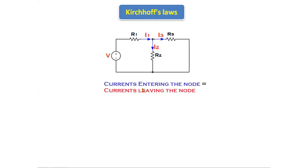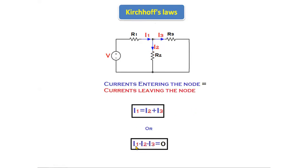Applying the statement that currents entering the node equal currents leaving the node, we get I1 = I2 + I3. We can also write this as I1 − I2 − I3 = 0, taking I2 and I3 to the left-hand side. Simply, the sum of the currents entering into the node is equal to the sum of the currents leaving.